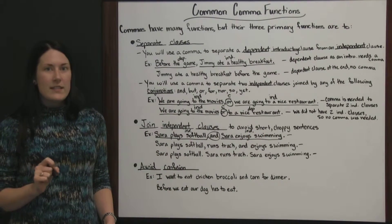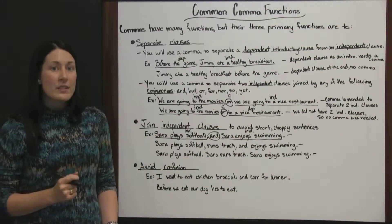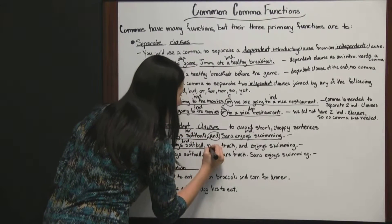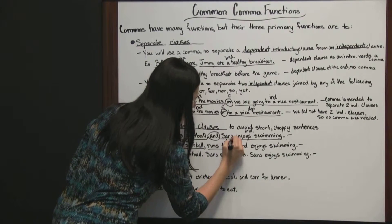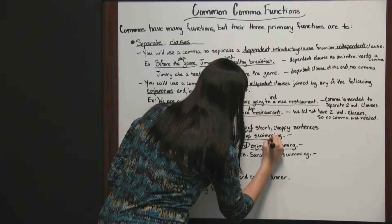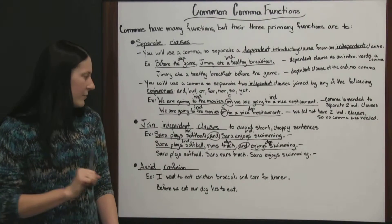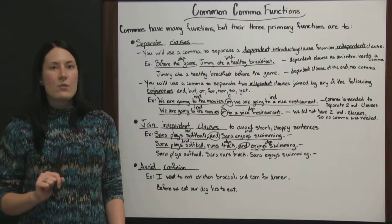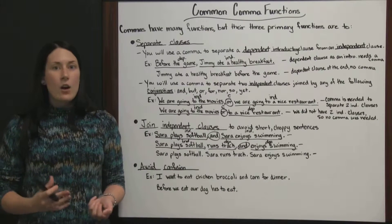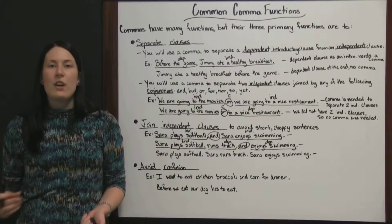Let's look at the next version: 'Sarah plays softball, runs track, and enjoys swimming.' 'Sarah plays softball' is independent; 'runs track' is dependent; 'enjoys swimming' is dependent. Yet we still have those commas. And then look at this last version: 'Sarah plays softball. Sarah runs track. Sarah enjoys swimming.' All three of these are independent clauses because they are complete sentences, but they're short, choppy sentences. We keep hearing Sarah over and over, and these sentences are short — we can combine them to make a smoother, flowing sentence.